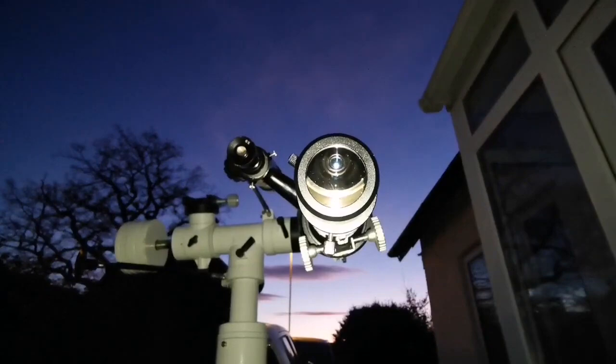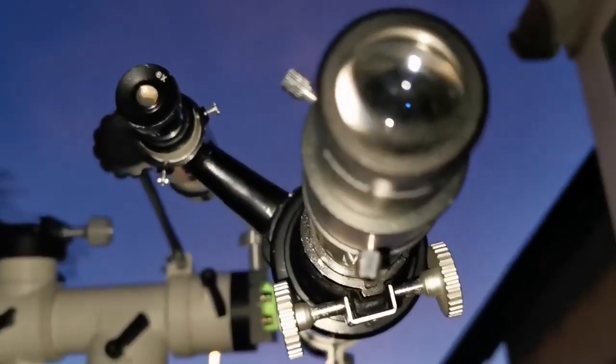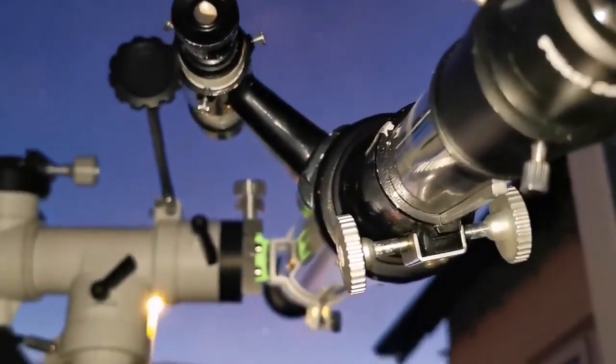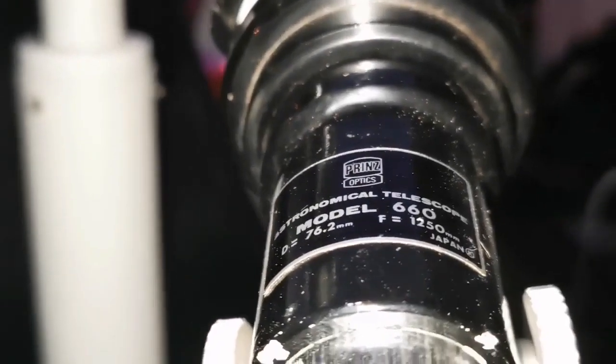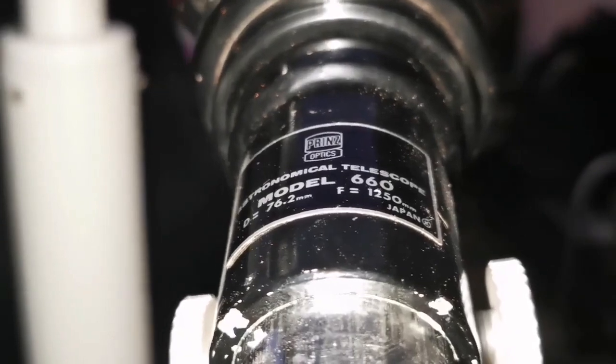So now I'm using a Prince Optic 76.2mm telescope. It has a focal length of 1250, it's a very long telescope and as you can see here, it gives you an F number around F16.4 I think. Let's see how is the view.